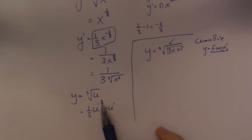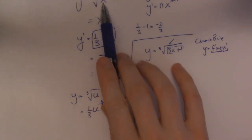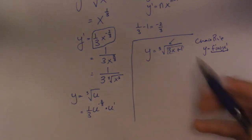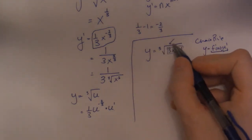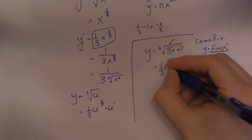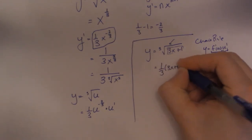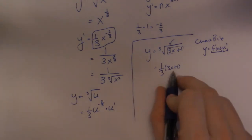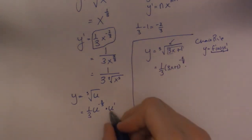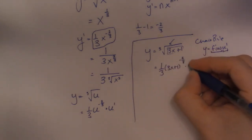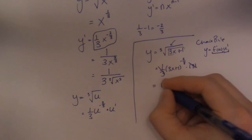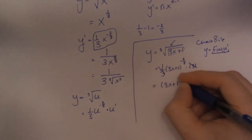Any time you have any function that has something other than just x inside it, you have to use this form. The way they think of it: take the derivative of the outside function — 1 over 3 — whatever is on the inside stays on the inside, and then multiply by the inside derivative, which is just 3. In this case those 3's cancel out and I'm left with just this expression.